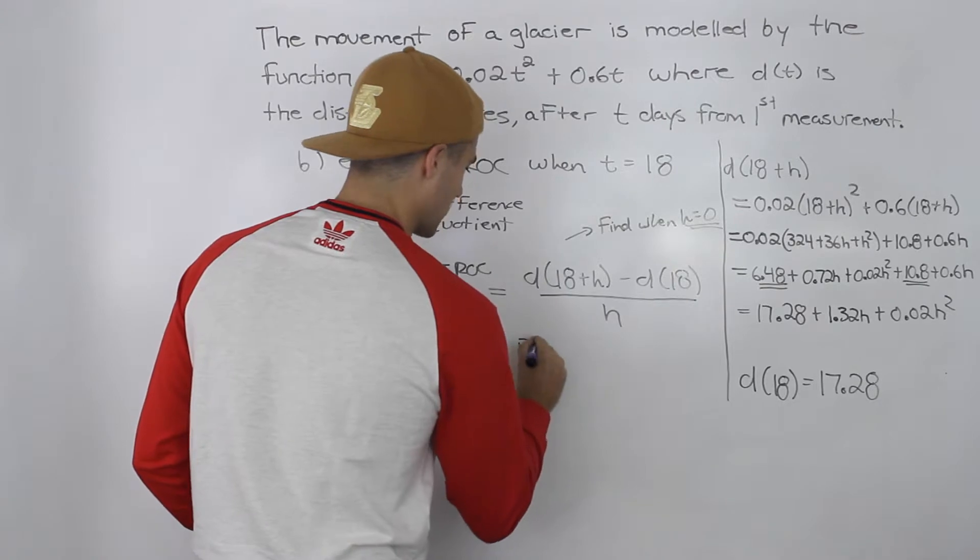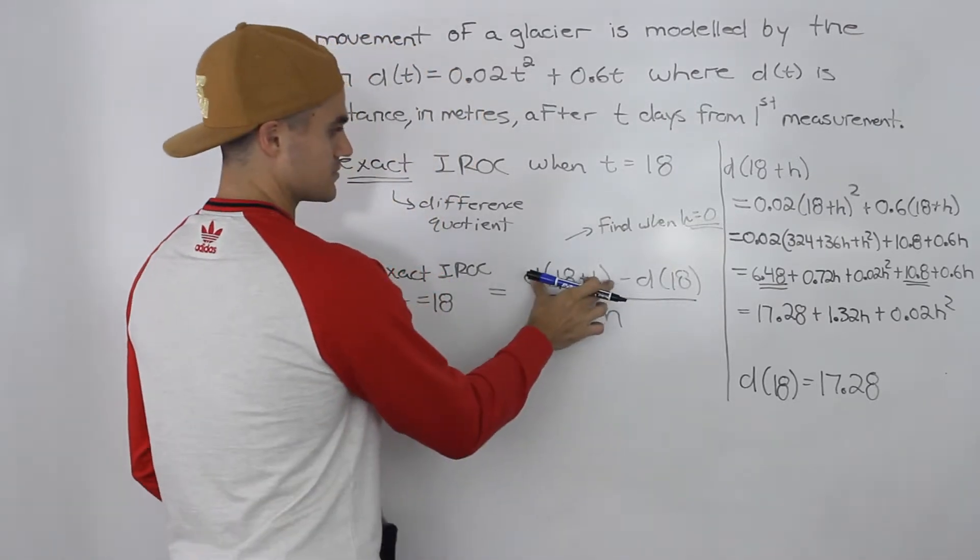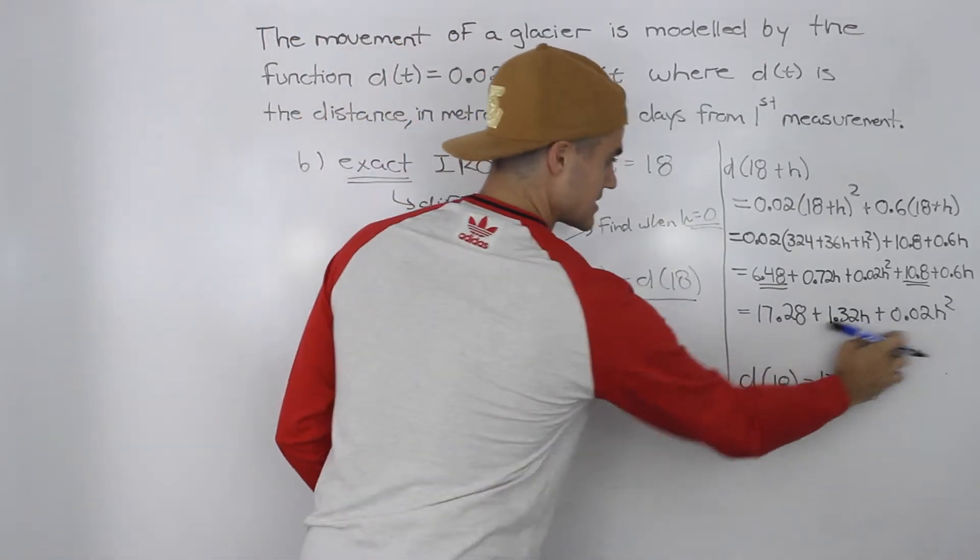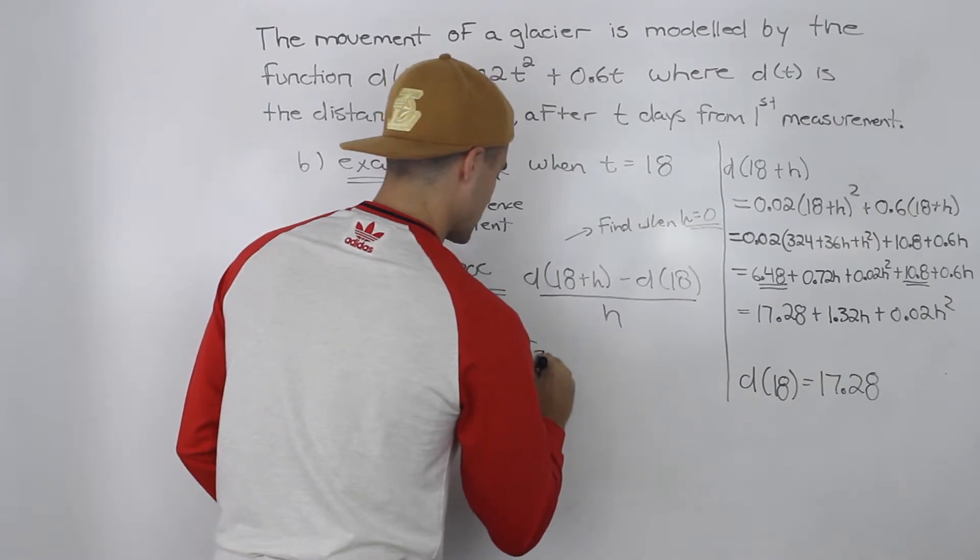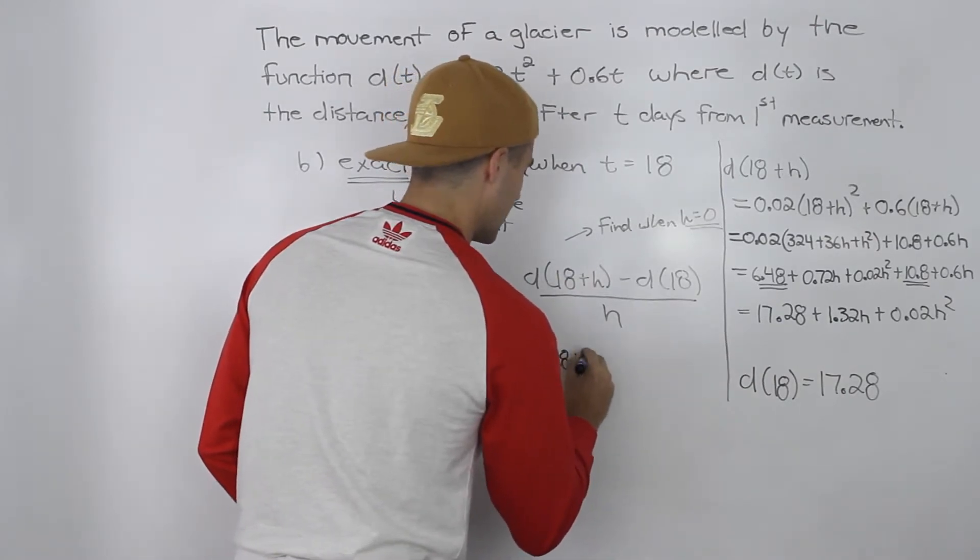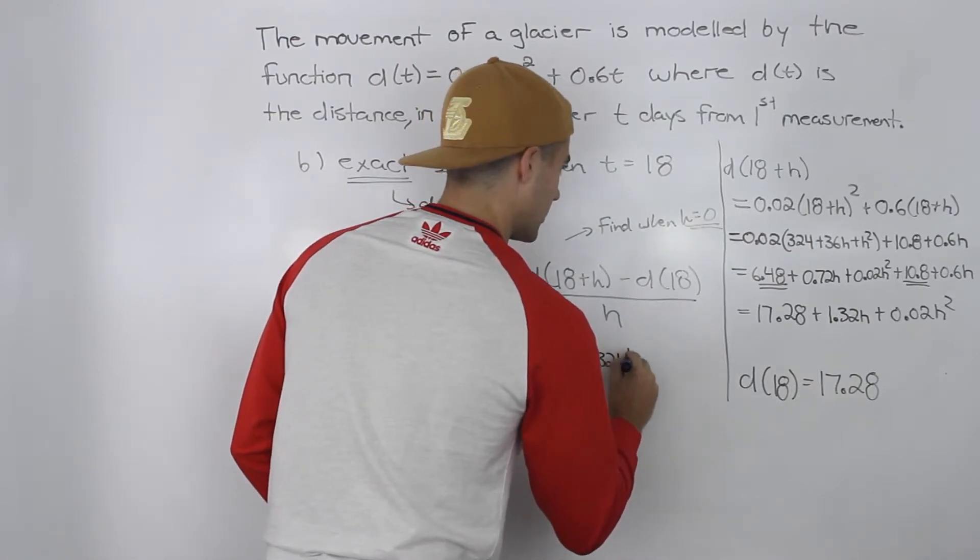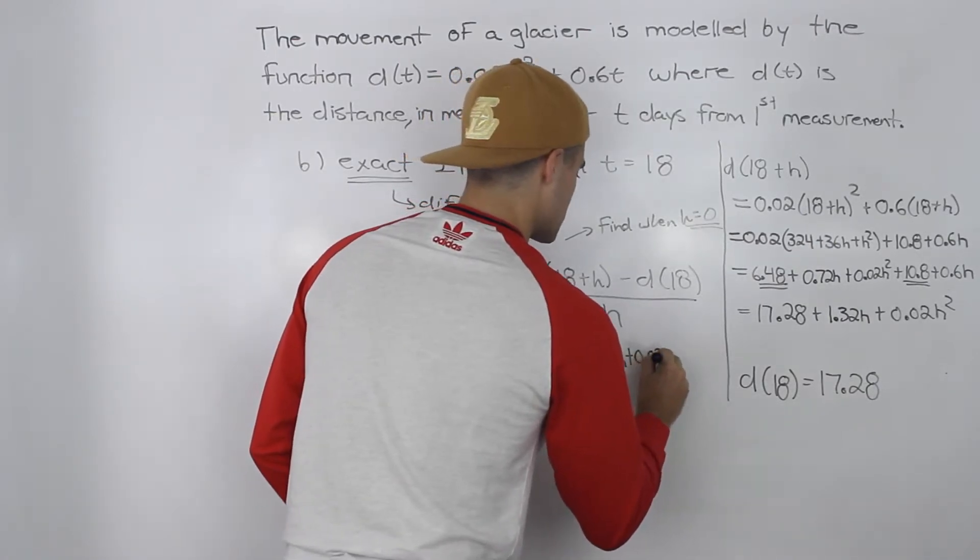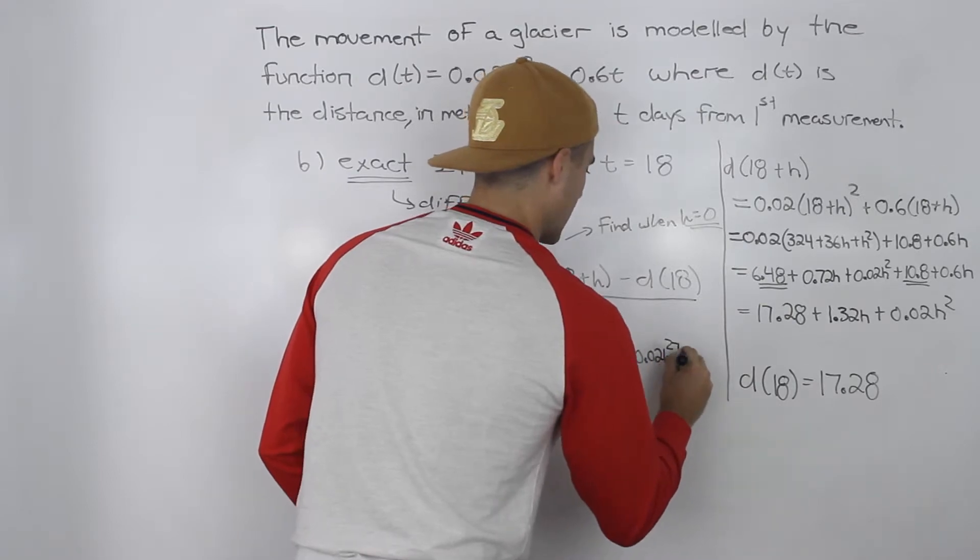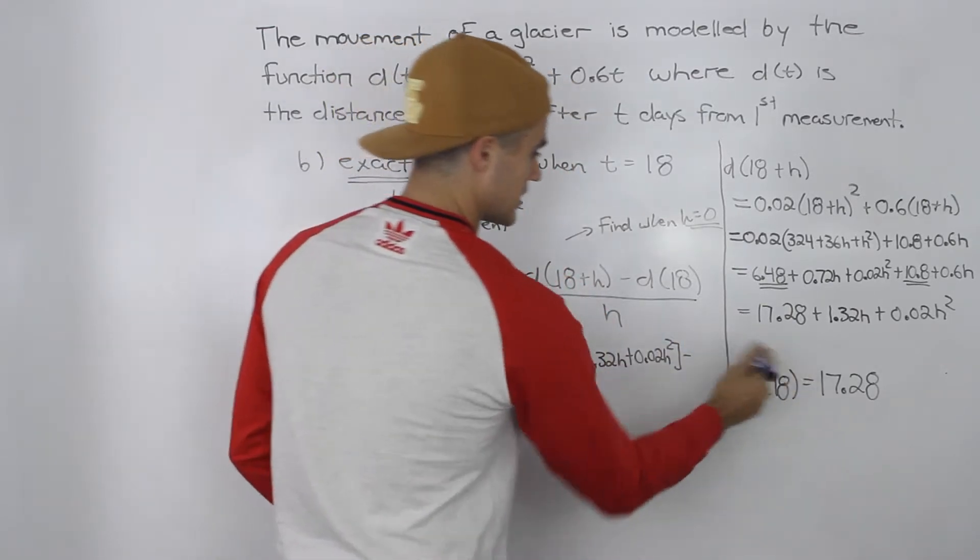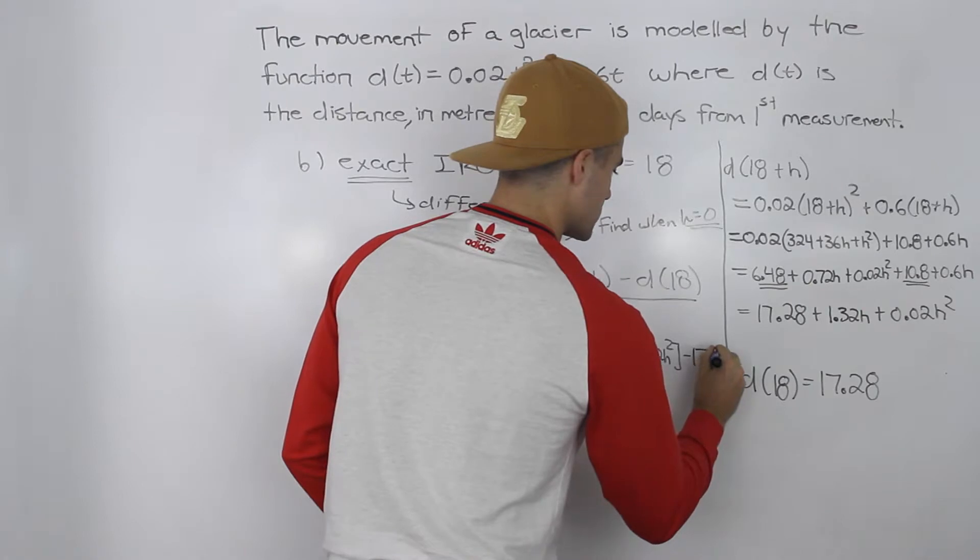Taking all of that and plugging it back into our difference quotient, d(18+h) is this expression: 17.28 + 1.32h + 0.02h². Then we subtract d(18), which is 17.28, all over h.